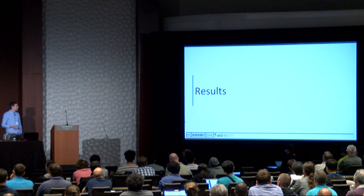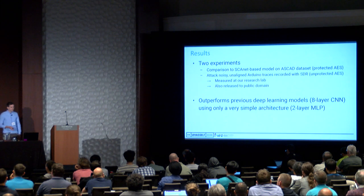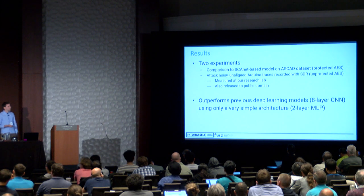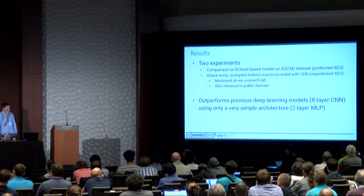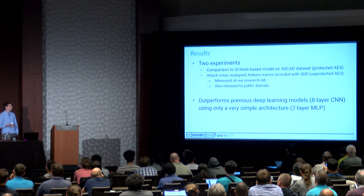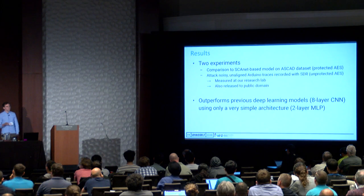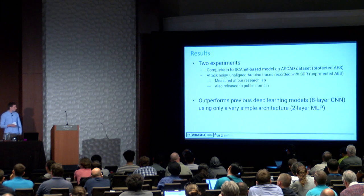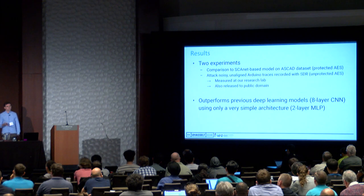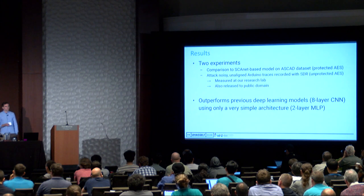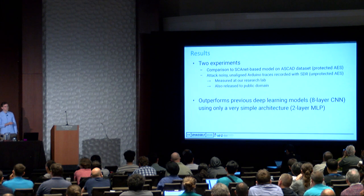On to the actual results. We had two experiments. The first compared to a SCANET-based model on the ASCAD dataset, which features a protected software AES implementation protected against first-order side-channel attacks. The second experiment used our own dataset—a very noisy, unaligned measurement of unprotected AES—to show resilience against feature translations and noisy datasets. We also released this dataset to the public domain. We show that even with a very simple architecture, such as a two-layer MLP, we are able to outperform previously introduced deep learning models such as the eight-layer CNN.